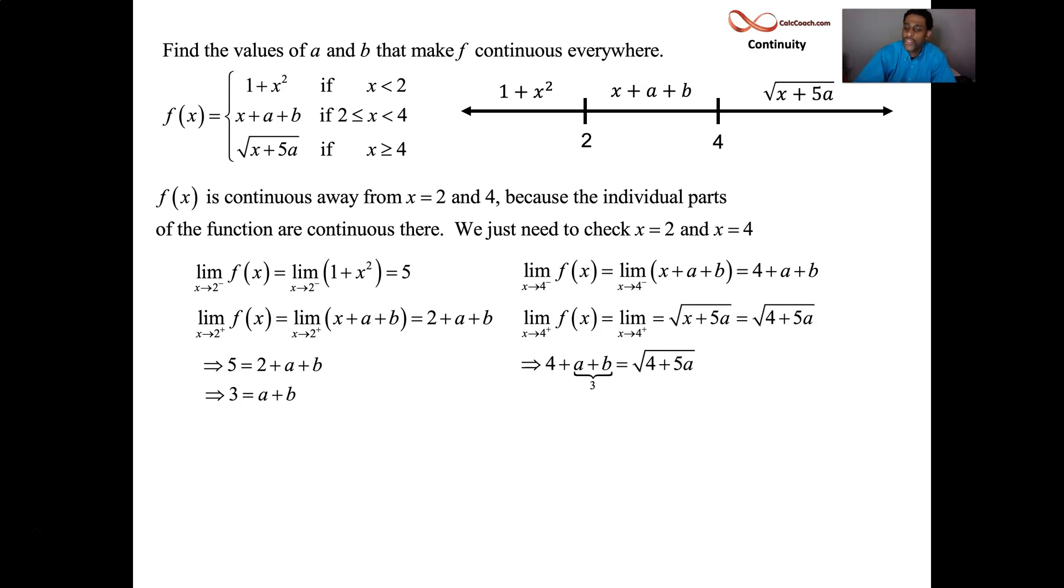7 is equal to the square root of 4 plus 5a. Square both sides. 49 is equal to 4 plus 5a. Subtract the 4. 45 is equal to 5a. Divide by the 5. a better be 9 if the line and the root are going to meet up.